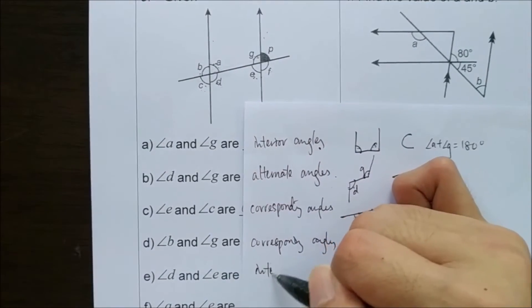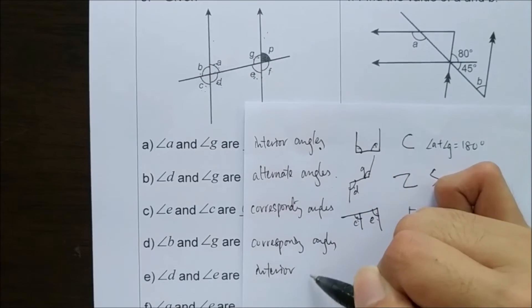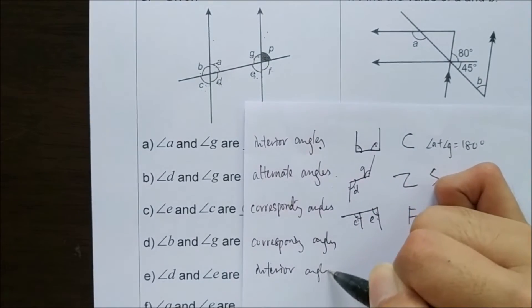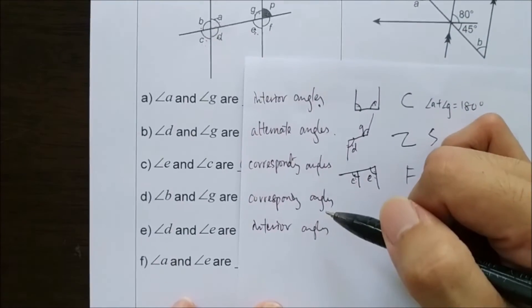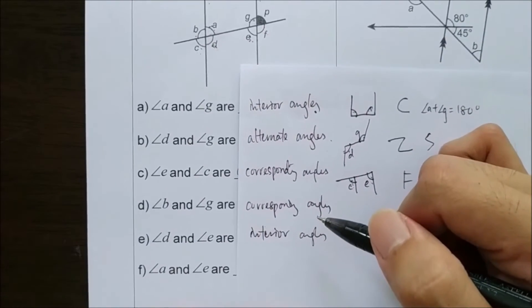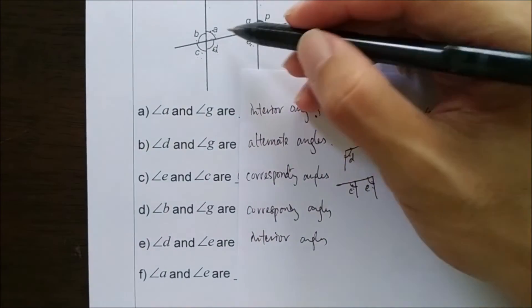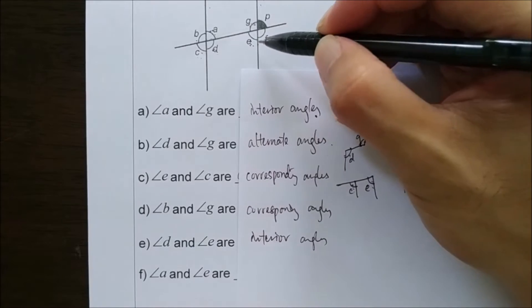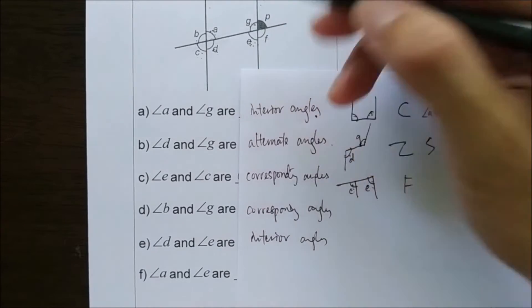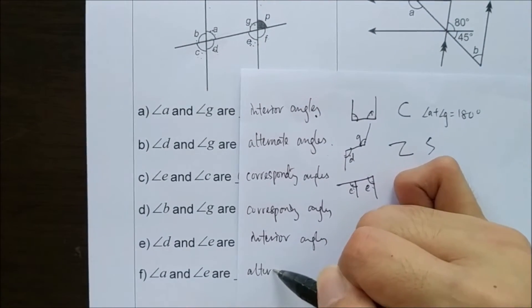D and E are interior angles. And lastly, A and E are alternate angles.